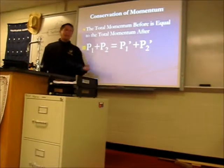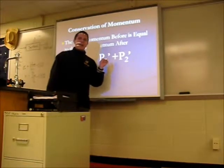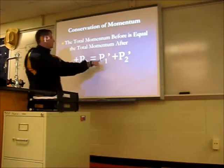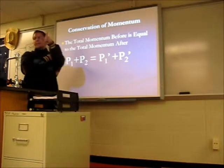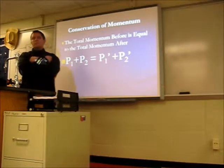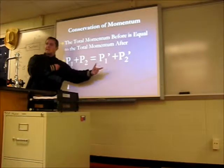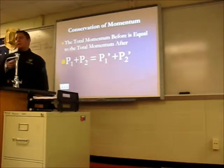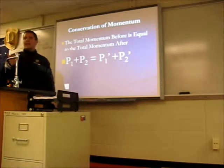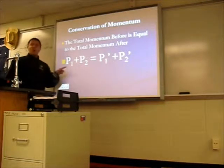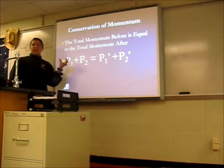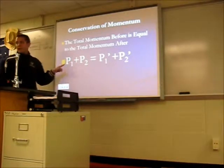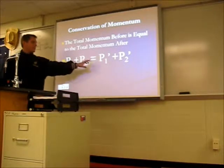Those are just made-up numbers. There's no momentum radar gun — we measure velocity. So we replace each p with mv, giving us the full formula with masses and velocities. The tick marks on P1 prime and P2 prime just mean the values have changed after the collision — we're still talking about the same objects, but with different numbers.